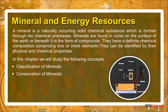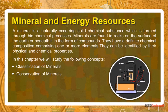A mineral is a naturally occurring solid chemical substance which is formed through biochemical processes. Minerals are found in rocks on the surface of the earth or beneath it in the form of compounds. They have a definite chemical composition comprising one or more elements and can be identified by their physical and chemical properties. In this chapter we will study the classification of minerals and conservation of minerals.